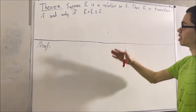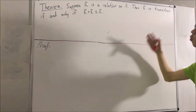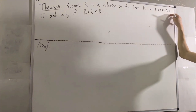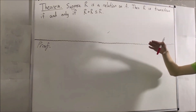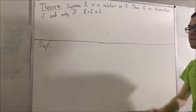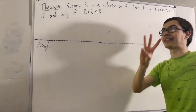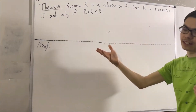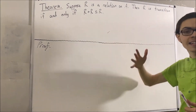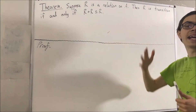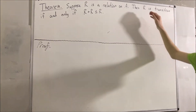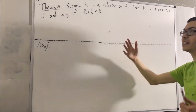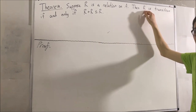Before we begin this proof, I would first like to mention what it means for a relation to be transitive. If you recall, all it means is: for every three elements x, y, and z in A, if (x,y) and (y,z) are both elements of R, then (x,z) is also an element of R.